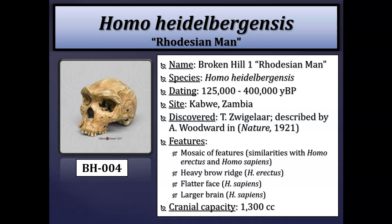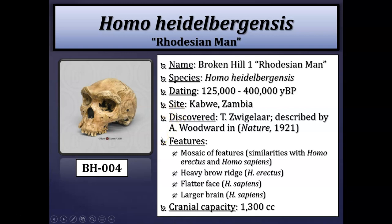Broken Hill One — also called Rhodesian Man — is another famous fossil attributed to Homo heidelbergensis, dating from about 125,000 to 400,000 years before present, uncovered in Zambia, Africa. It shows a mosaic between Homo erectus and Homo sapiens: the very pronounced double-arch brow ridge resembles Homo erectus, while a less prognathic, flatter face and a larger brain size of around 1300 cc's approach Homo sapiens. This concludes Part One of the Later Members of Genus Homo presentation; Part Two will follow.